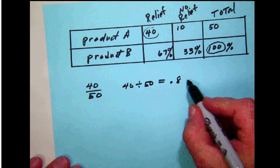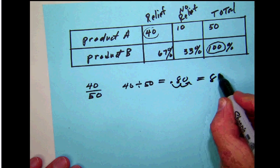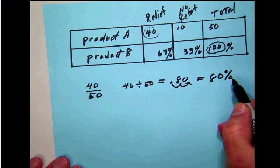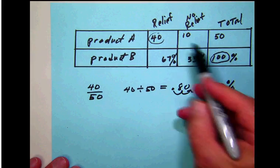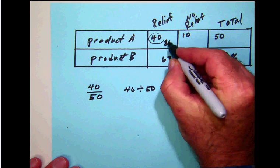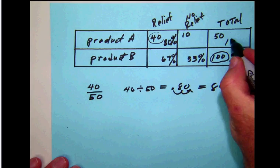So what we're going to do here is move that decimal over and get the answer 80%. The 40 who found relief out of the 50 constitute 80% of the total. The 50, of course, is 100% of that.